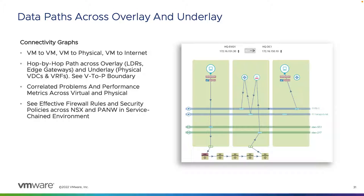Within vRealize Network Insight, we can also do data paths across the overlay and the underlay. We've always had the capability of doing VM-to-VM mapping — we can do VM to VM, VM to physical, or VM to internet mappings. Here you can see an example of a VM-to-VM mapping across three different hosts. I can see the source and destination, any firewalls in place — the NSX Distributed Firewall and the Palo Alto Virtual Firewall — all the overlay segments, the tier 0 and tier 1 routers, and then the underlying infrastructure including physical firewalls, load balancers, and router switches traversed in the path for this specific source and destination.